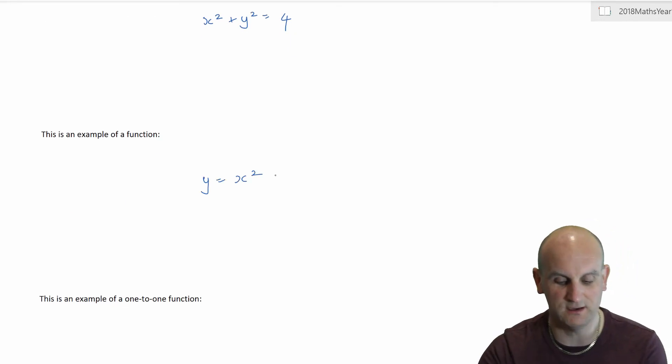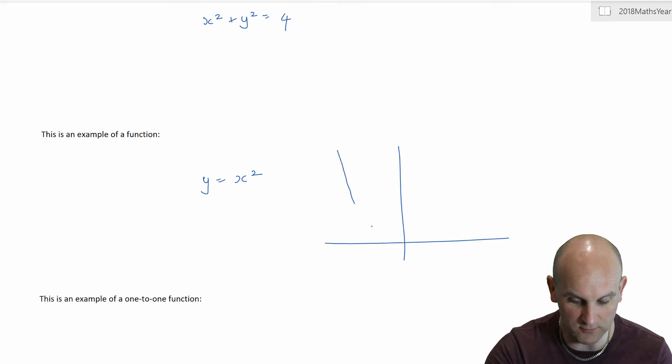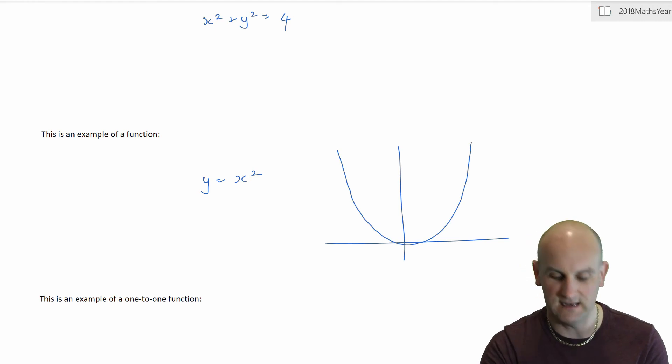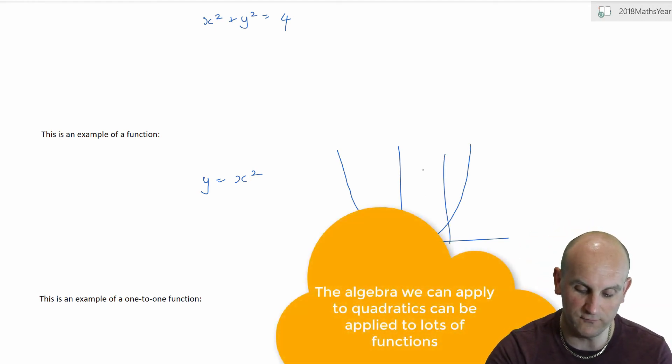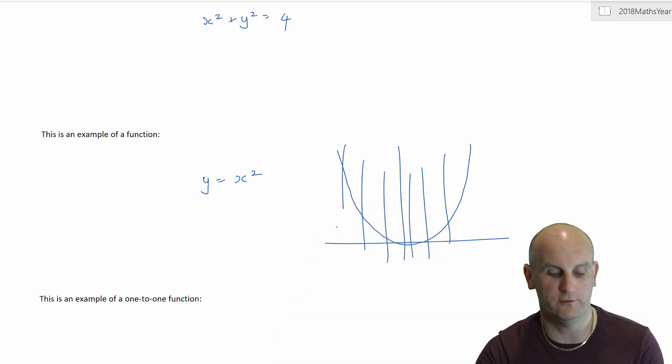So what would be an example of a function? Well, one of the ones we use ever such a lot is the graph y equals x squared. Why is that? Why do we use it a lot? Well, it's really the basis for lots of different things. Now, that's not the best drawing of y equals x squared, but again, if I draw vertical lines anywhere through this function, it will only cross once.